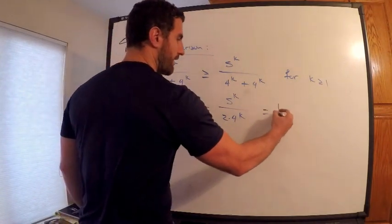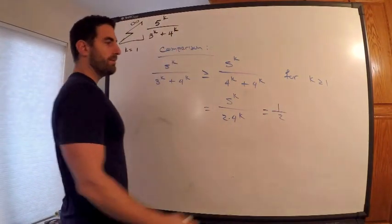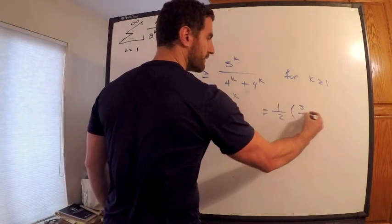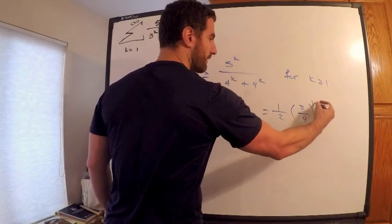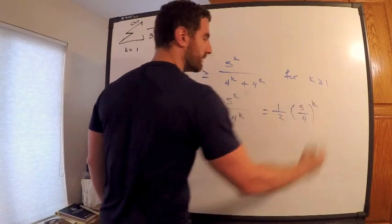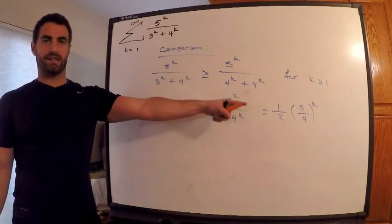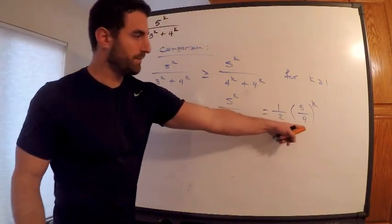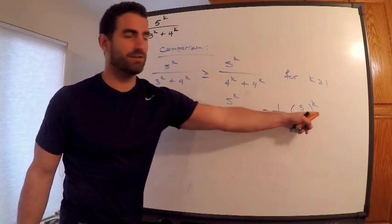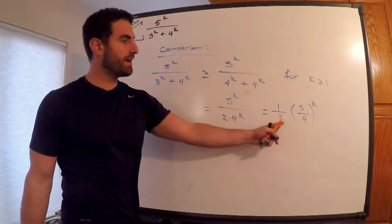So this is equal to one-half times (5/4)^k. You should recognize that again—I mean this is geometric. First term, well depending what I start k at, the first term could be a half or a half times 5/4, and the common ratio is 5/4.